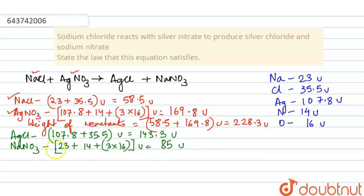If we add these two, we get the weight of products. So weight of products is 143.3 plus 85 atomic mass unit, which makes it to 228.3 atomic mass unit. We see that weight of product is equal to the weight of reactants.